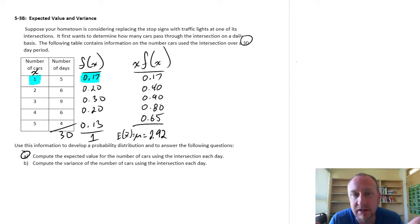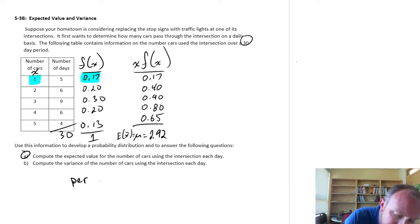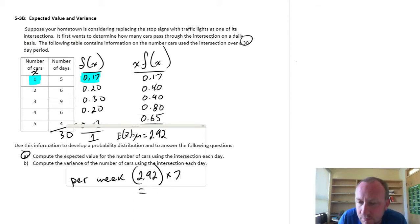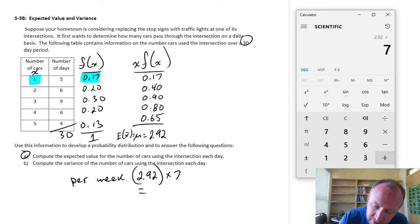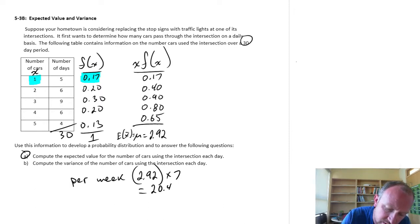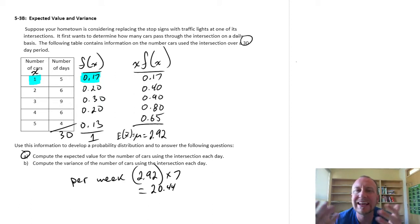So what this means is that on any given day, we can expect an average of 2.92 cars to use this intersection. Now another use for this, given this context, is that we can actually do a rough forecast or estimate of how many cars will pass through this intersection over a number of days. Because if we have an average of 2.92 cars passing per day, then what does that mean over, let's say, a period of one week? So per week, this would be 2.92 cars on average per day times 7 days in a week, which is 20.44. So around 20 cars, because we can't have a fraction of a car.